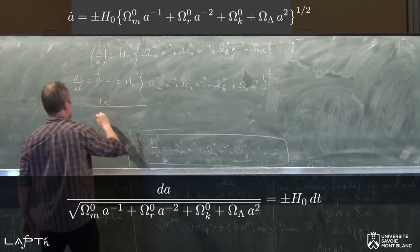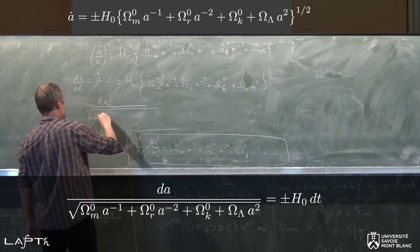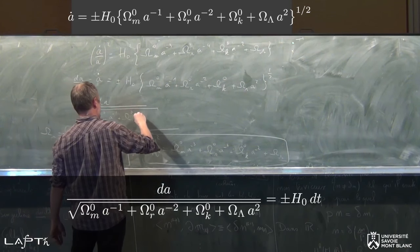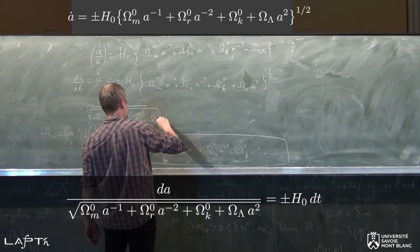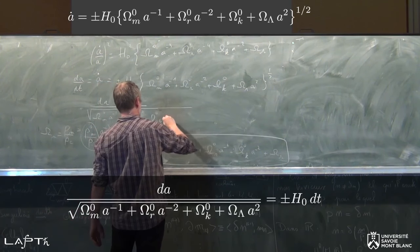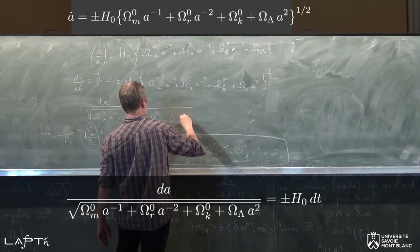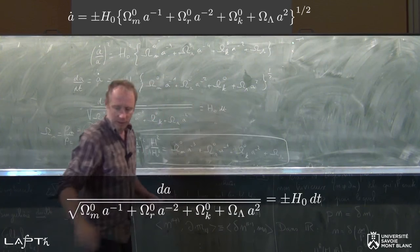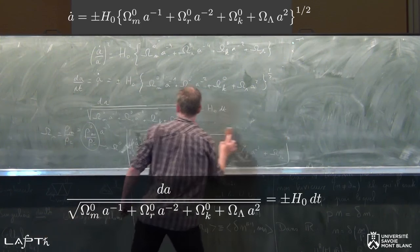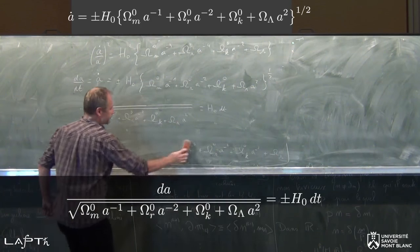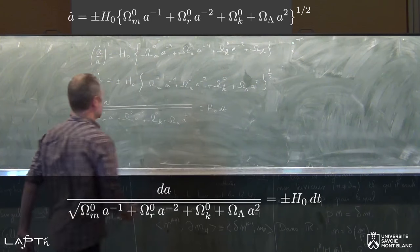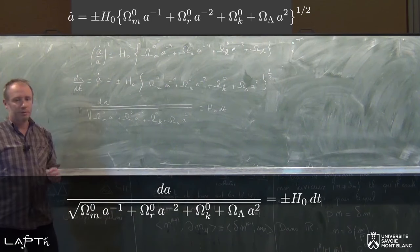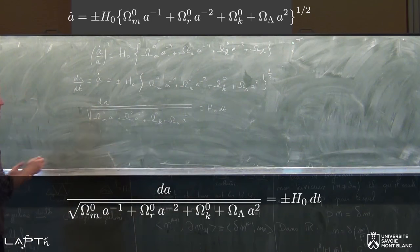Ça me donne : dA sur racine de Ω_M0 A⁻¹ plus Ω_R0 A⁻² plus Ω_K0 plus Ω_lambda A², c'est égal à H₀ fois dt. C'est ça qu'on veut intégrer. On veut à la fin avoir A en fonction de t ou bien t en fonction de A, c'est-à-dire se débarrasser des différentiels.